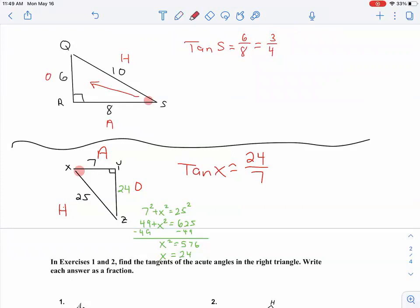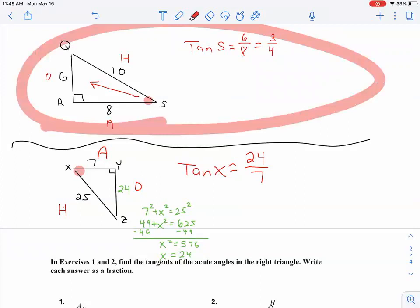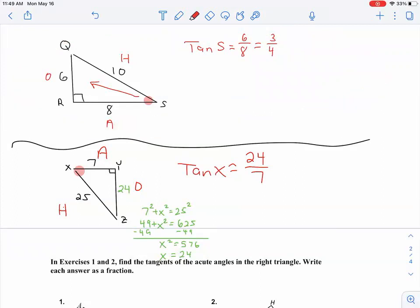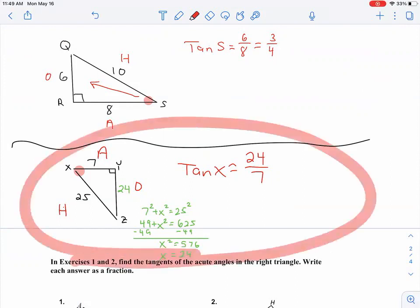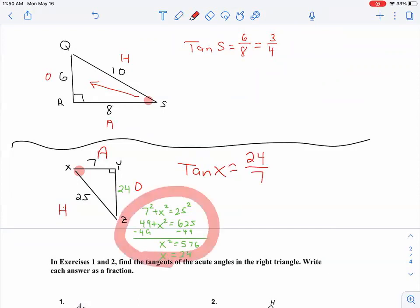So those are the two types of problems you're going to see. The first type is when you're given all three sides and we're just writing opposite over adjacent. Or the second one, you might be missing a side like either the opposite or the adjacent. You have to do a little Pythagorean theorem first and then write your ratio.